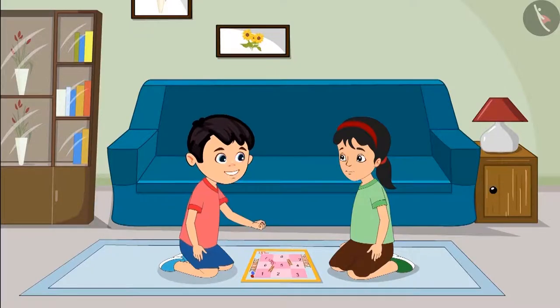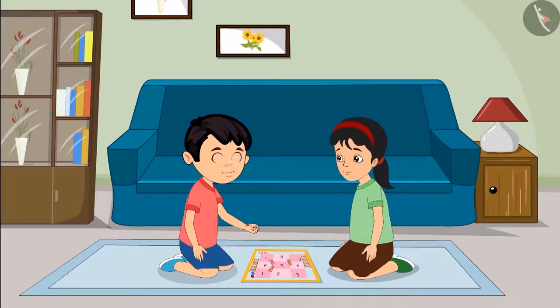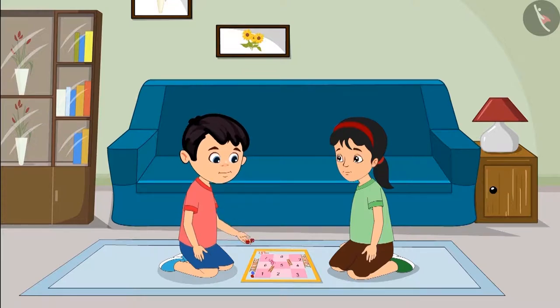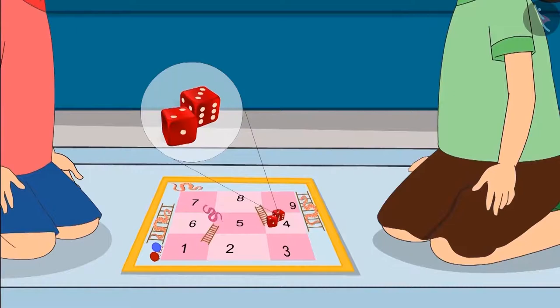May I roll the dice first? Yeah, sure. Then add the numbers on both the dice correctly and move your piece forward. Okay. Chotu rolls both the dice. Just see, 2 is written on one dice and 3 on the other.